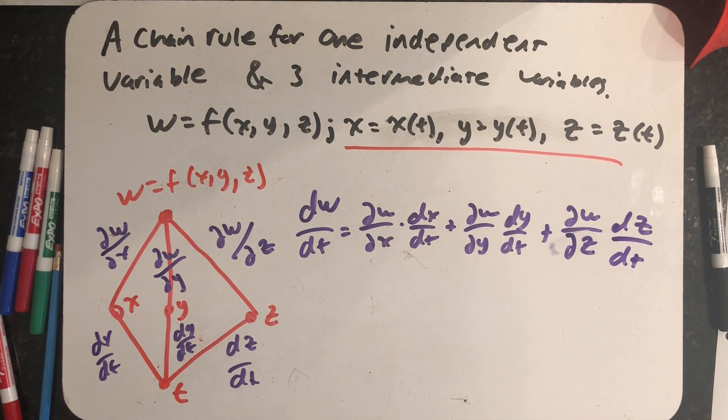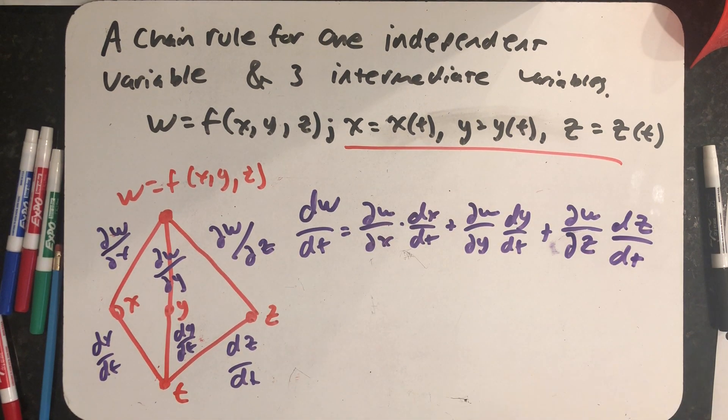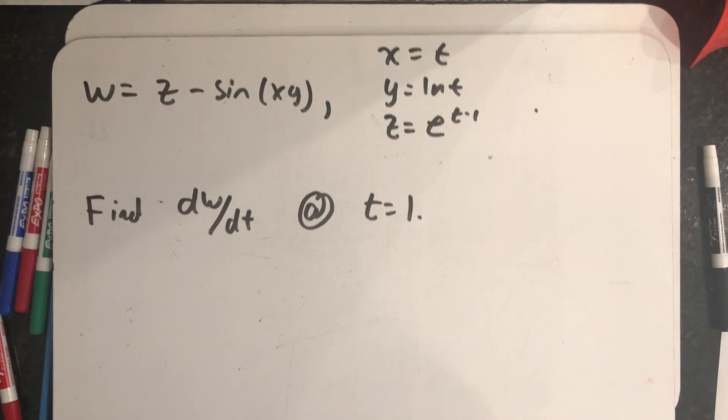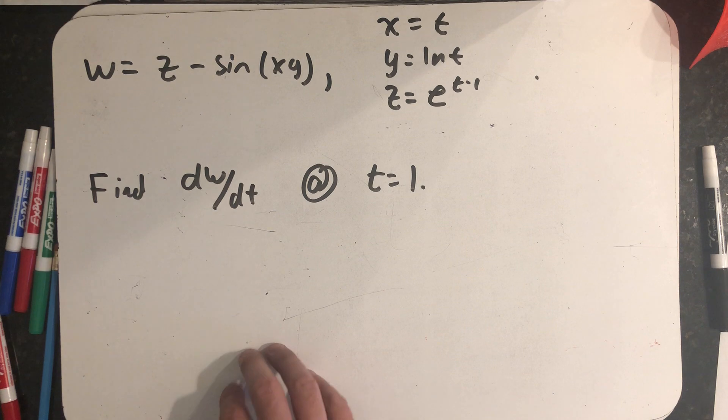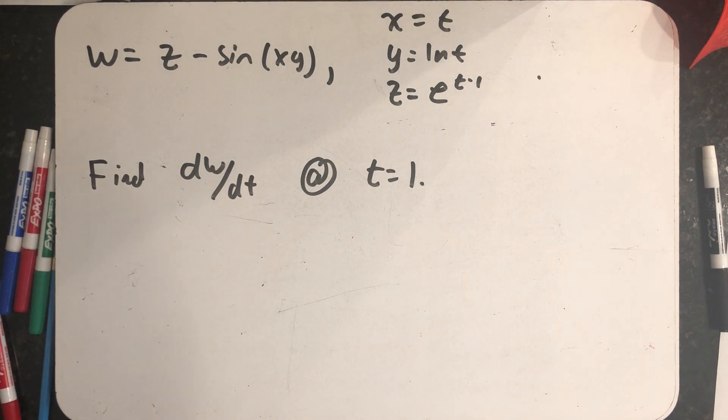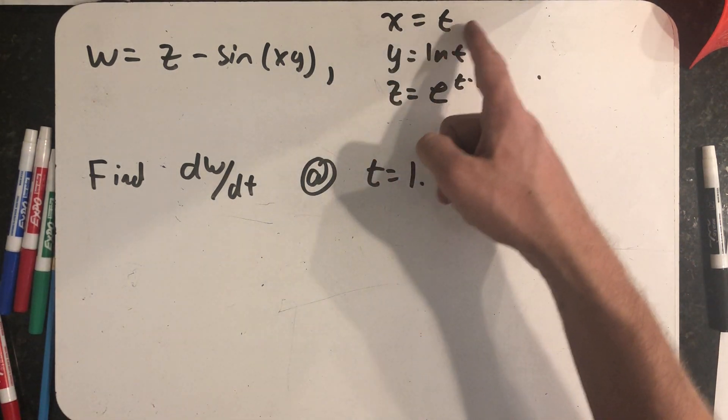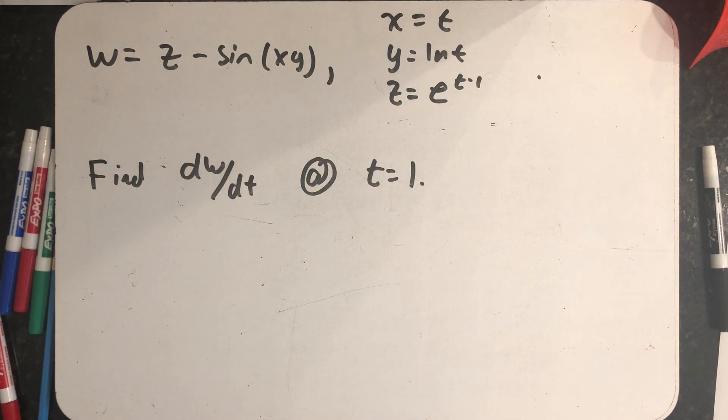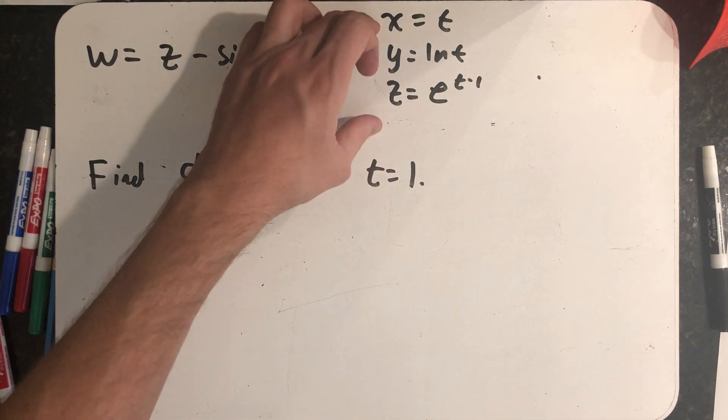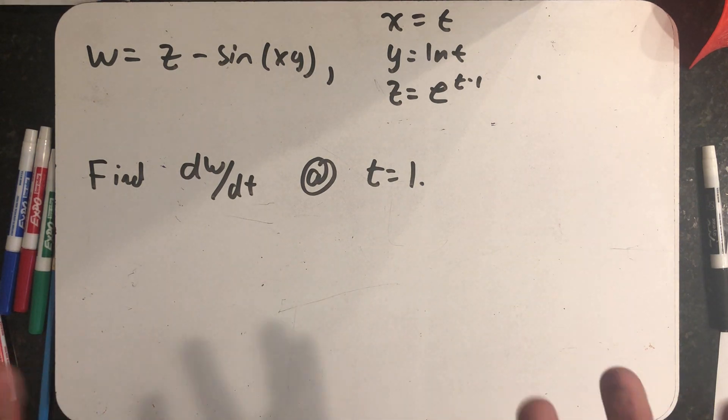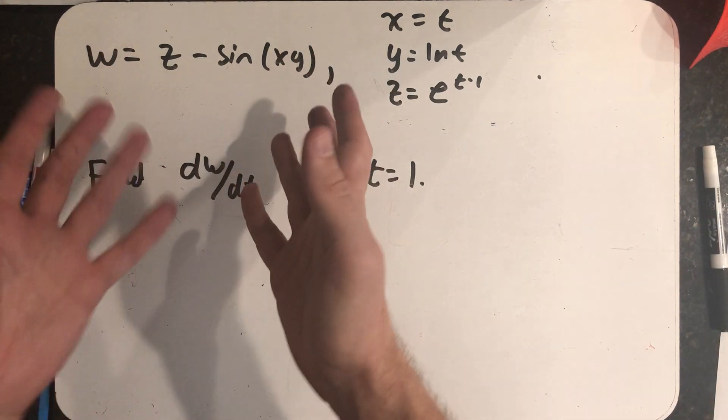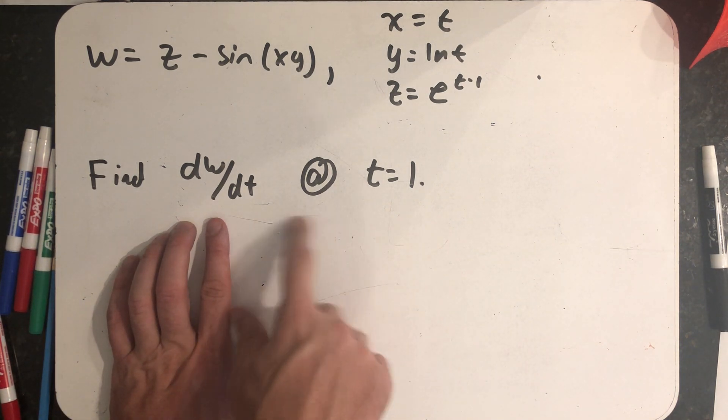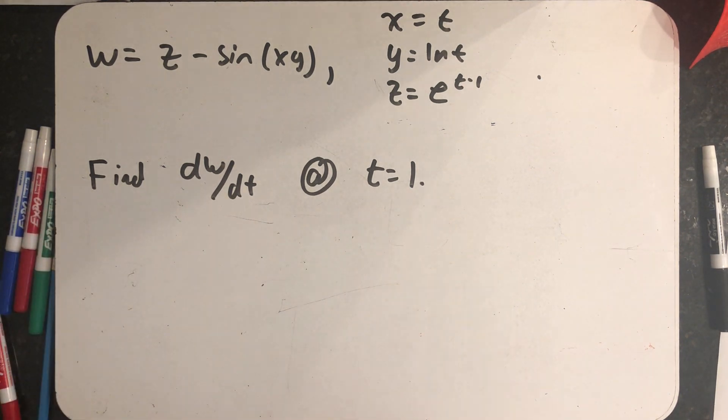So now what I want to do is do an example where I get to use this chain rule. So I have a function on three variables: w is z minus sine of x times y, and then x is t, y is the natural log of t, z is e to the t minus 1. These are parametric equations generating some curve in space that I then plug into here to get a w. But I'm asked to find dw/dt, and this time I'm asked to evaluate it at t equals 1.